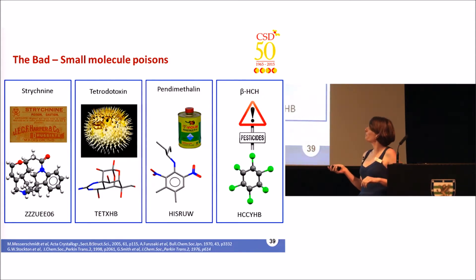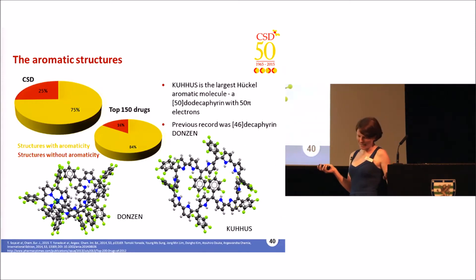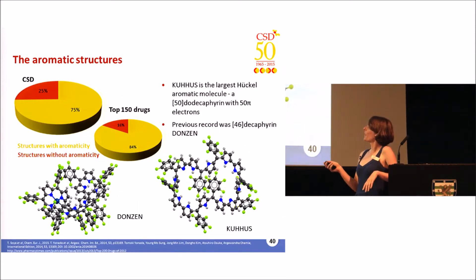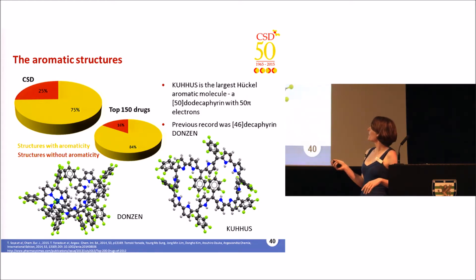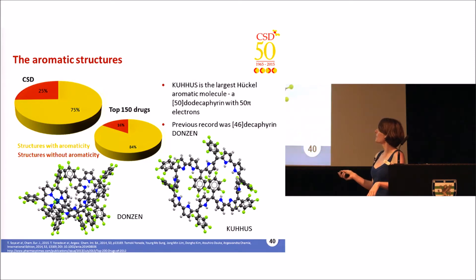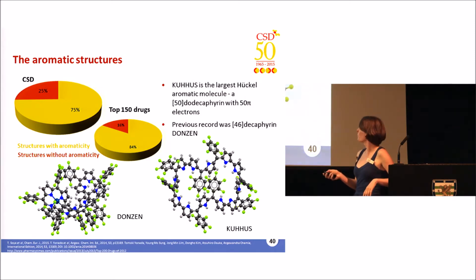The CSD does have a darker side though — it contains lots of poisons, herbicides, and pesticides too. It also contains lots of aromatic structures. Over three quarters of the structures in the CSD actually have aromatic bonds, and if we look at just the top 150 small-molecule drug molecules, over 84% contain aromatic bonds. This year saw the record for the most aromatic structure, taking over from a structure published the year before by the same group.